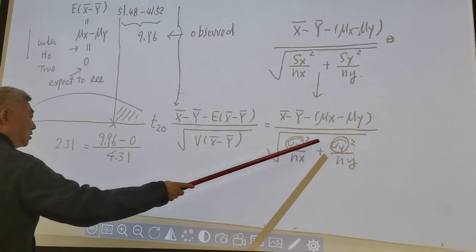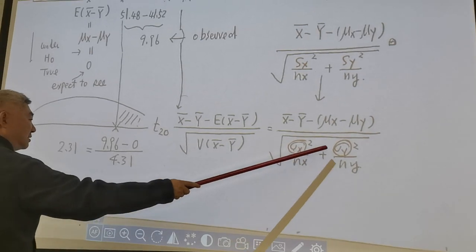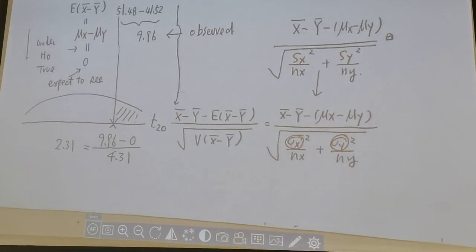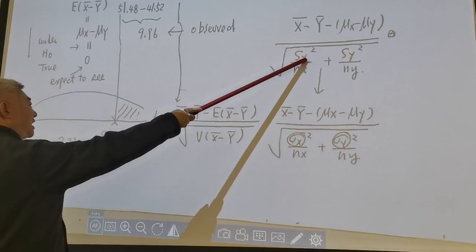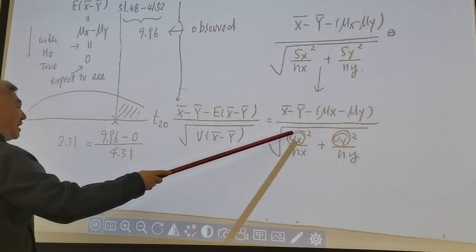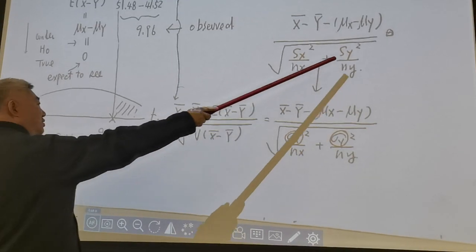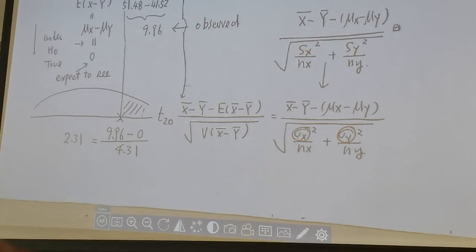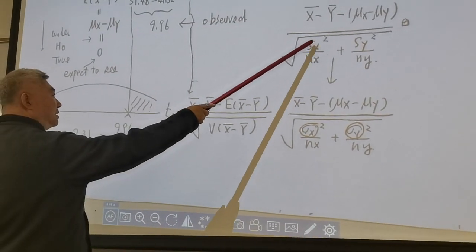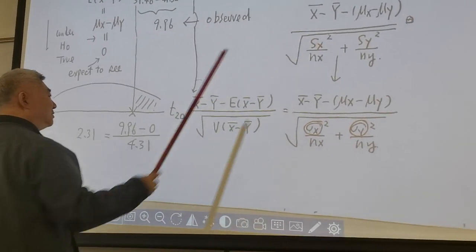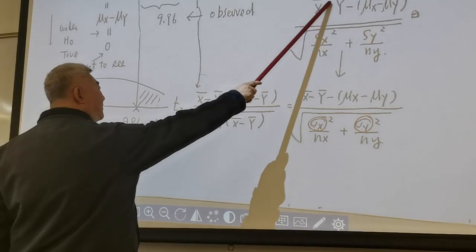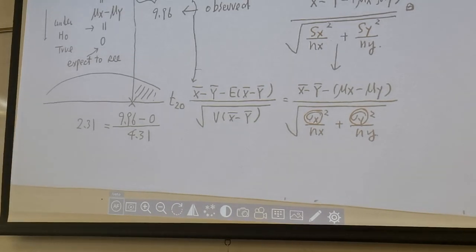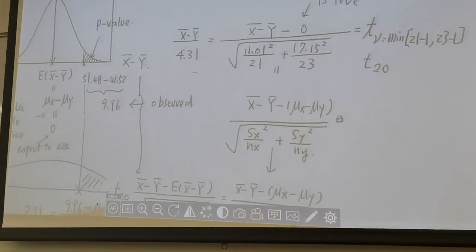But in most real-life applications, we don't know sigma x and we don't know sigma y. So what can we do? We use sample standard deviation sx to estimate sigma x. We use sample standard deviation sy to estimate sigma y. So after this replacement, this is no longer a z distribution. This random variable follows a t distribution. So let's look further. Look at here.